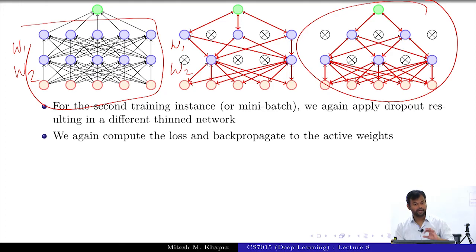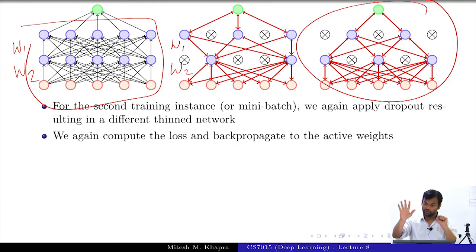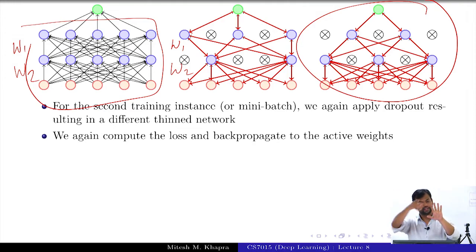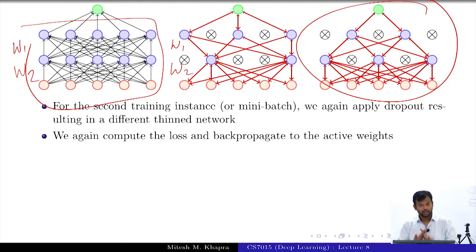To repeat: there is just one weight matrix. We sample a thinned-out network which uses only some of these weights. For that training instance we update those weights. The likelihood of the same network being sampled again is very low, but we do not care, because a different network sampled next will still share some of those weights and update them.